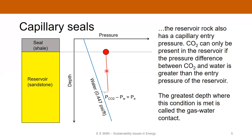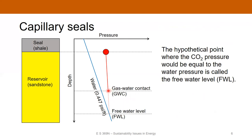Above the gas water contact, you've got a connected column of CO2. We can continue this pressure line hypothetically below the gas water contact, and the point where this CO2 pressure trend would intersect the water phase pressure is called the free water level. That's kind of a theoretical construct — there's nothing really special about the free water level except that it is the reference depth at which the CO2 pressure and the water pressure would be equal. The pressure condition at the top is dictated by the entry pressure of the seal, and at the bottom by the entry pressure of the reservoir.